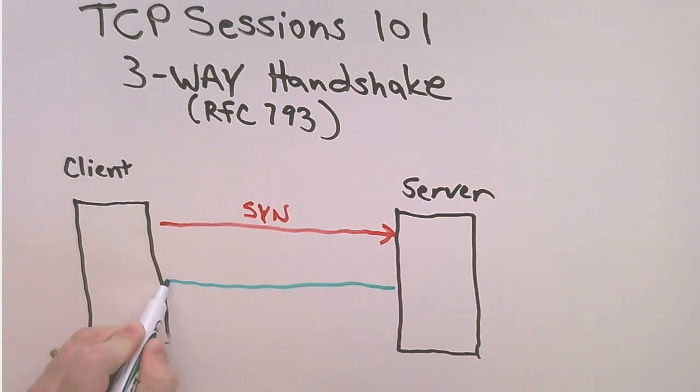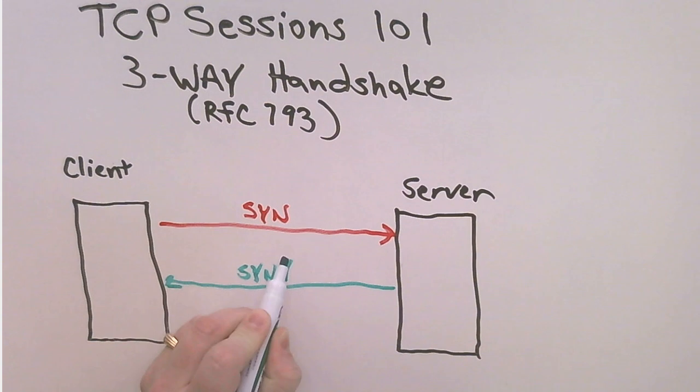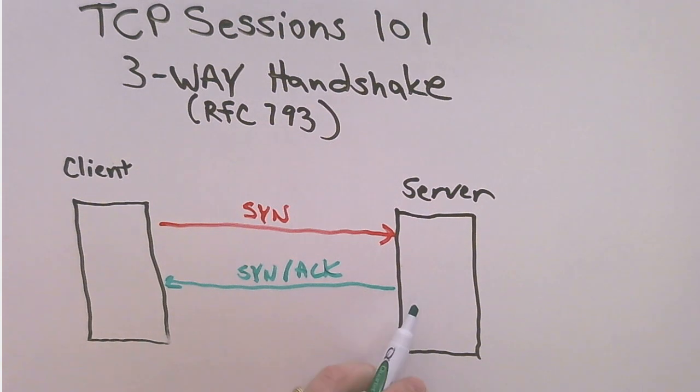it sends back a SYN and an ACK acknowledgement. So the acknowledgement is the server saying, okay, I received your sequence number through SYN. And so the server also sends its sequence number to the client for it to use.